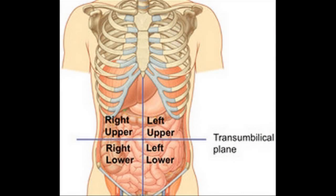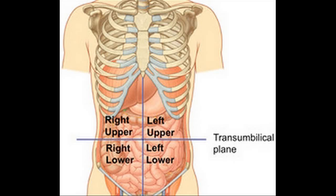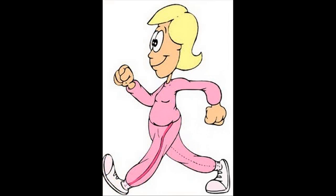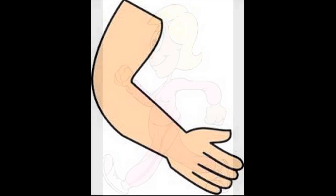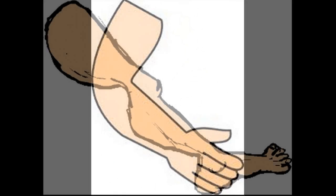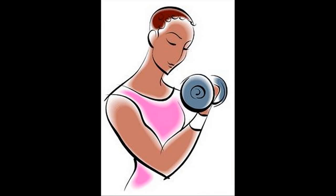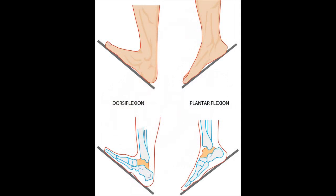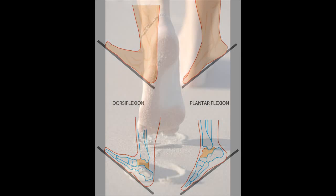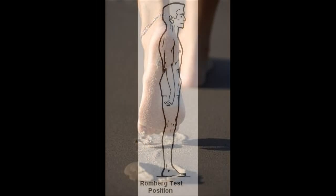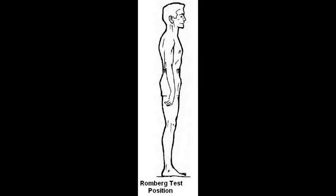Abdomen soft with active bowel sounds all four quadrants, denies pain or tenderness with palpation, no bruit heard over abdominal aorta. No edema to extremities, hair distribution even bilaterally on lower extremities. Strength five over five equal bilaterally on hands, dorsal and plantar flexion. Gait steady, no swaying with Romberg's test.